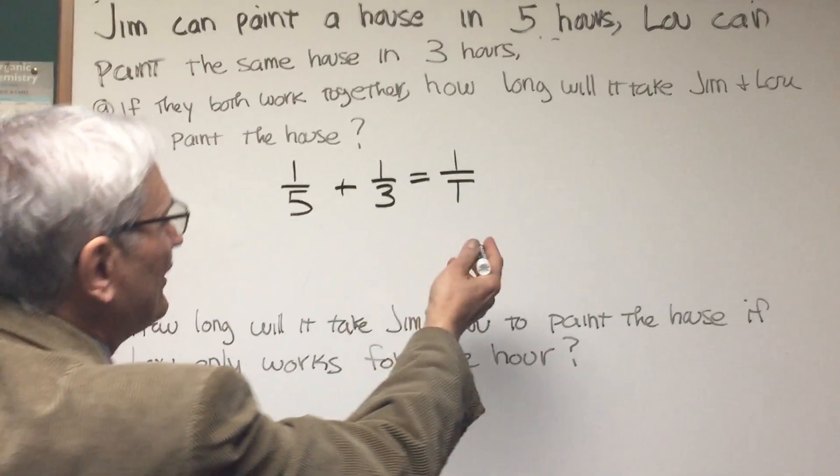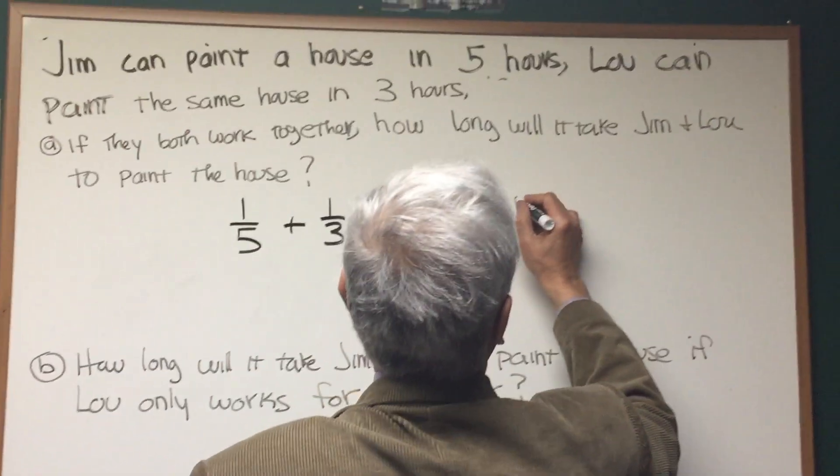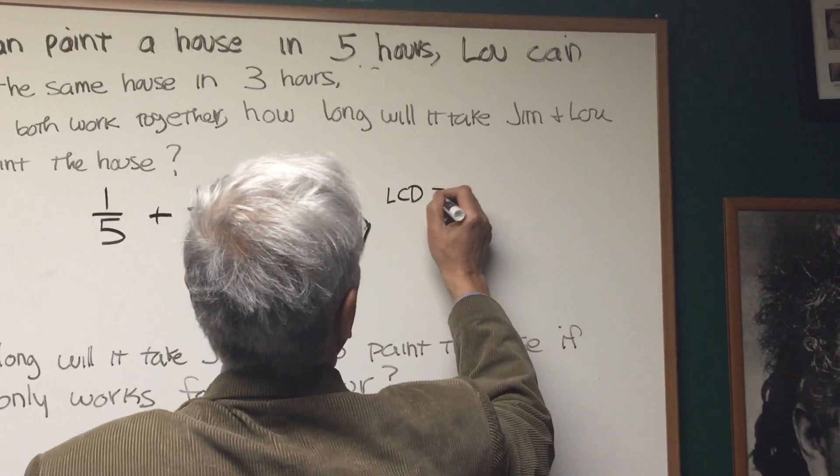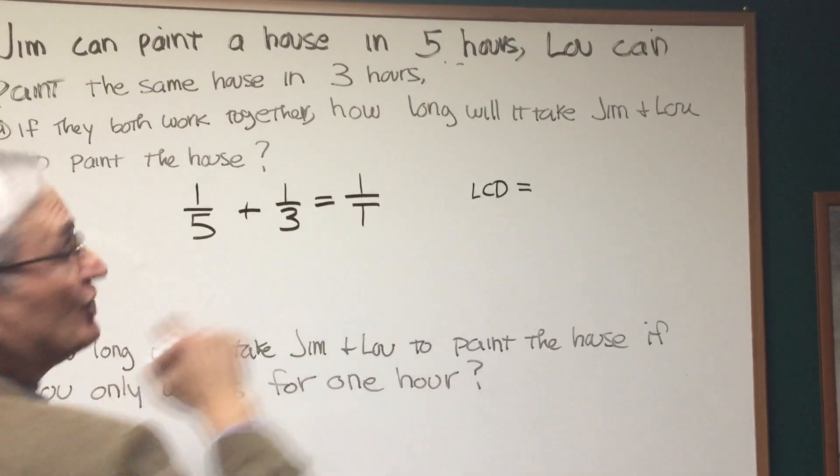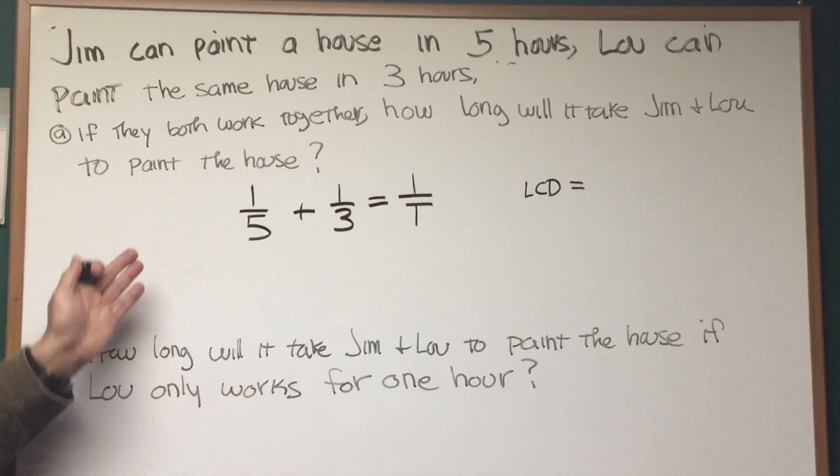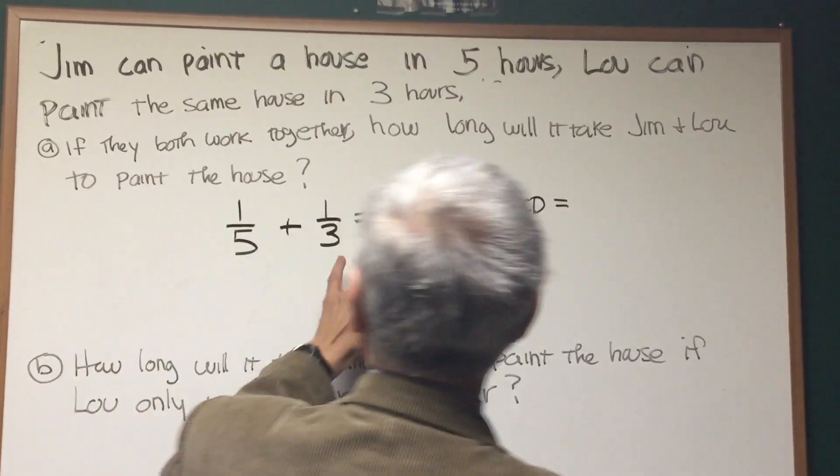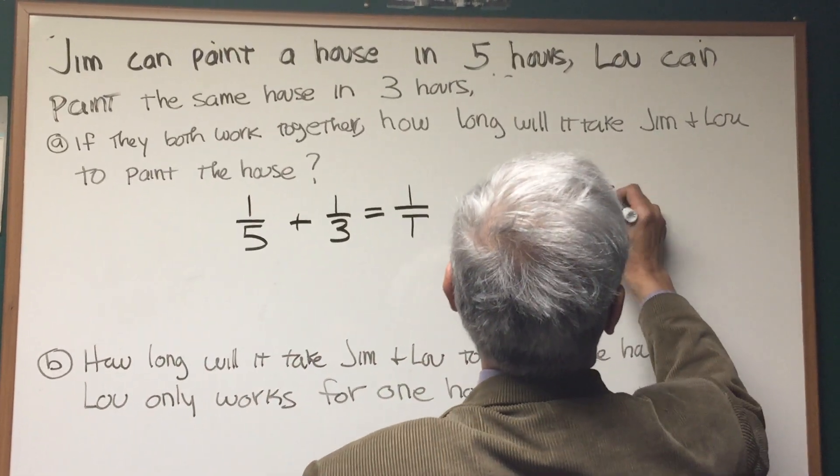Very simple equation. How do we solve an equation like this with fractions? We find the least common denominator of all three fractions involved. What's the least common denominator here? Five times three times T? It's 15T.